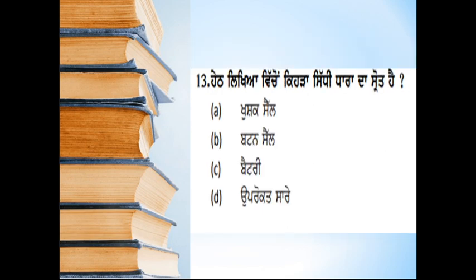Thirteenth question: which of the following is a source of direct current? Some options are given: dry cell, button cell, battery, and all of the above. I think it is very clear — whether it's a cell or a battery, all are sources of current. So our correct answer will be D — all of the above.